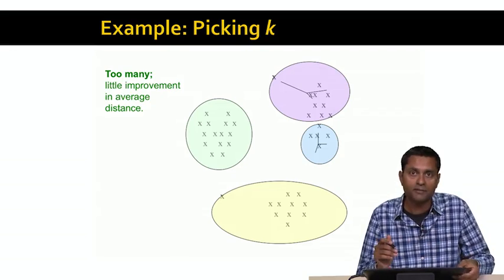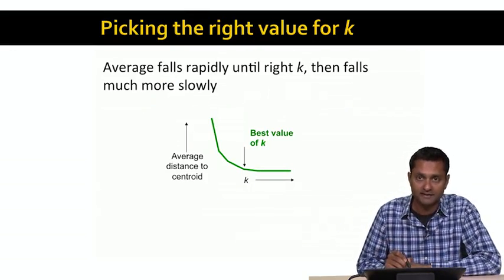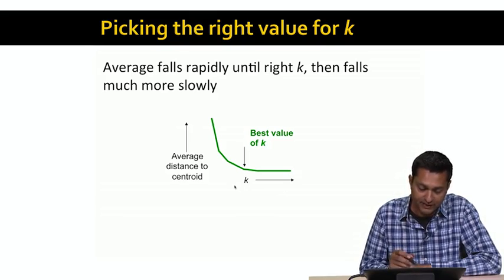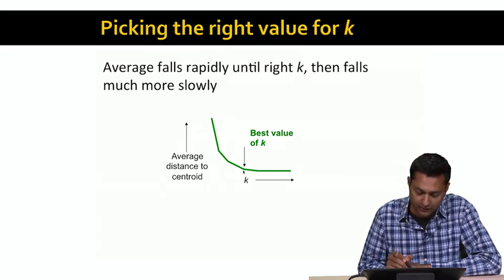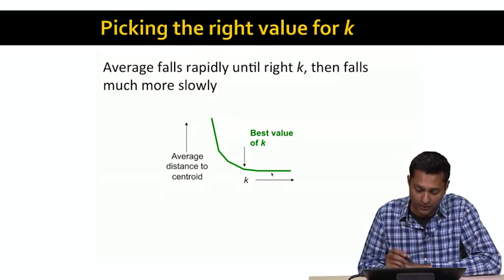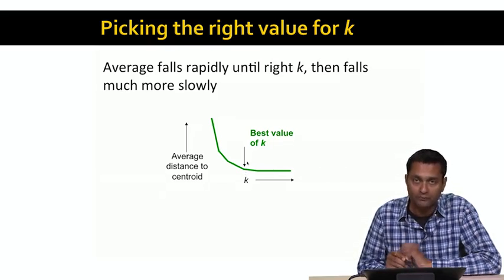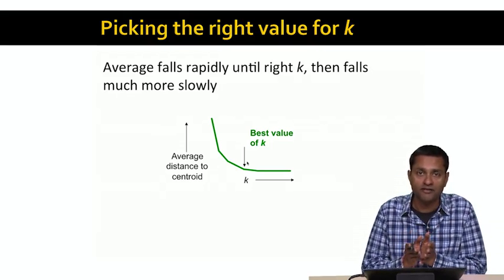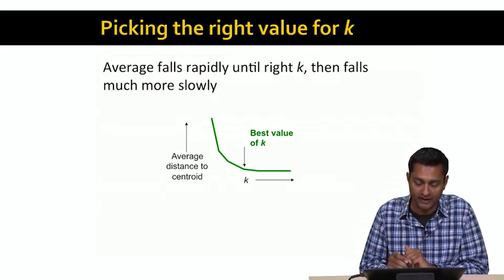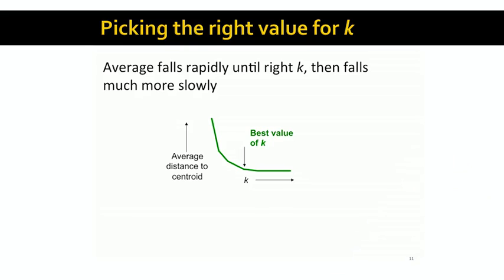We can see this very clearly if I plot a graph where the x-axis is k, the number of clusters, and the y-axis is the average distance to the centroid. As k increases, the average distance to the centroid keeps falling, but at some point there's a knee in the curve and the average distance falls only very slowly. The obvious thing to do is to pick a value of k close to the knee of the curve, where you get a fairly low distance to the average centroid without too high a value of k. So in this case, the best value of k is the one shown in the picture.